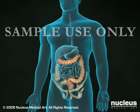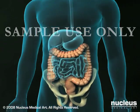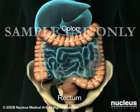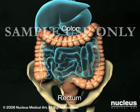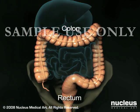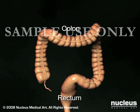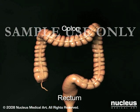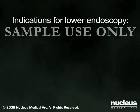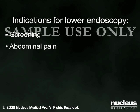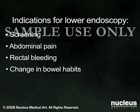A lower GI endoscopy, also called colonoscopy or sigmoidoscopy, allows your doctor to view the mucosal lining of your lower gastrointestinal tract. The procedure is used as a screening test in individuals with no symptoms, or to help diagnose unexplained abdominal pain, rectal bleeding, or a change in bowel habits.